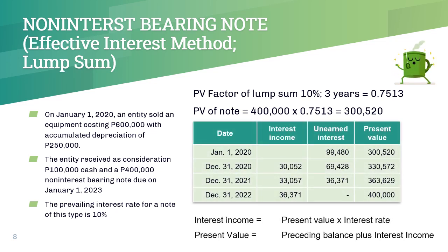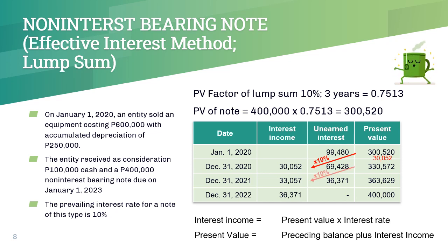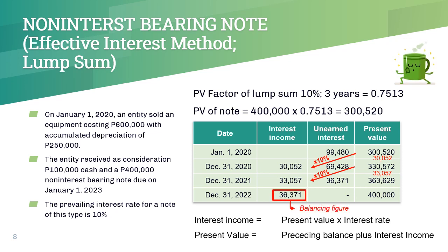The amortization table is as follows. Note that at the end of 3 years, our present value is equal to our face value of 400,000 pesos, which is the amount that we expect to collect on the note. Every year, our present value grows by the effective interest rate of 10%. The interest income is computed as the present value times the interest rate. The interest income in the last year is simply the balancing figure to force the present value to equal the face value of 400,000 pesos.